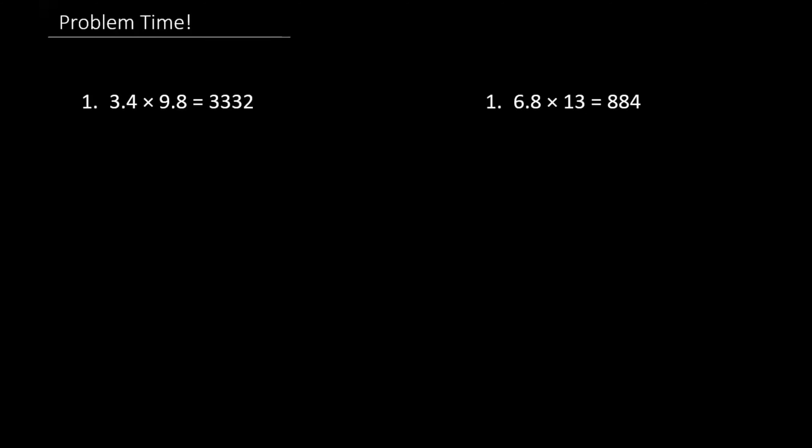I want you guys to know that even if you use the first method or the second method, your answer should stay the same. Now it's problem time. Pause the video and try these questions on your own, then unpause and check if your answers are right. I will assume that you guys paused the video and let's get started. The first problem: 3.4 times 9.8 equals 3,332.